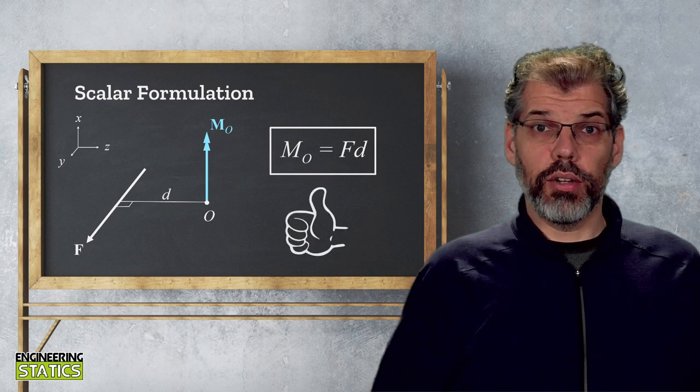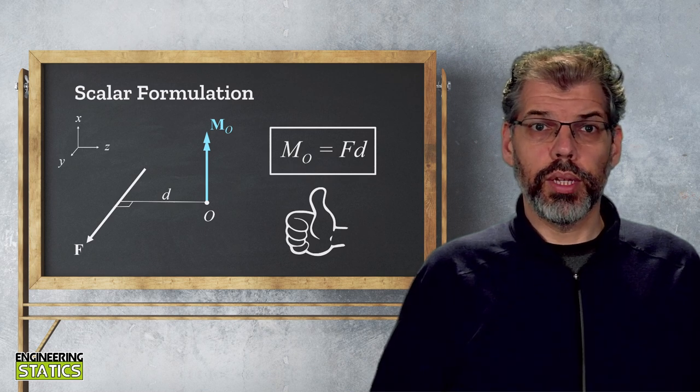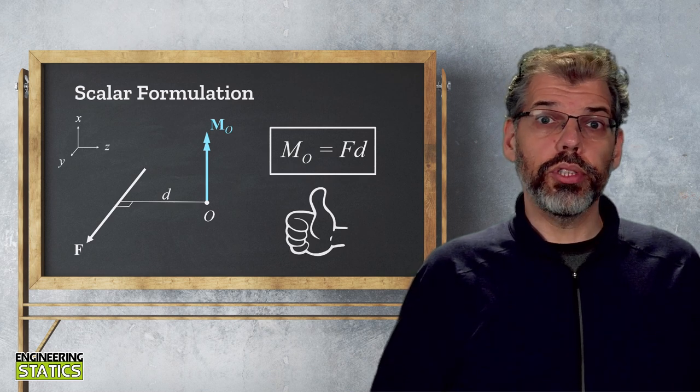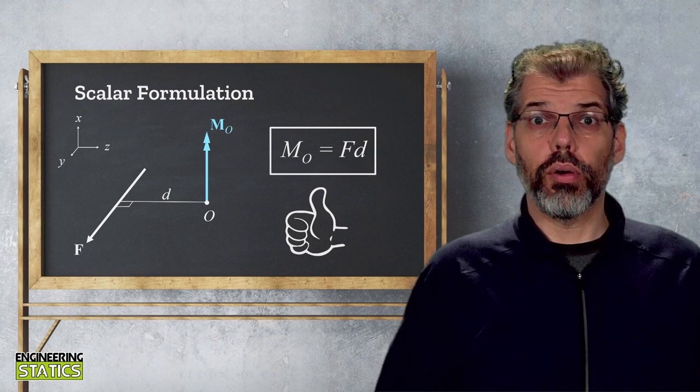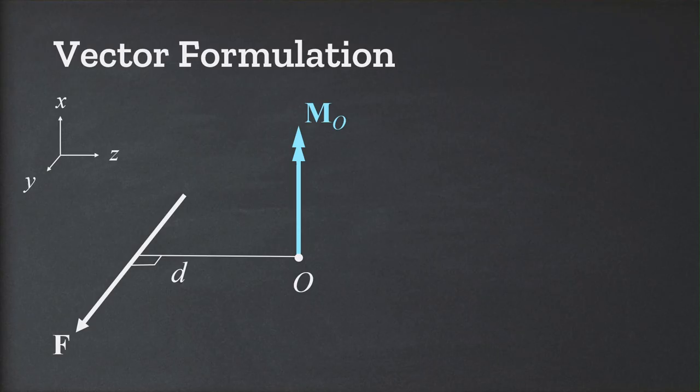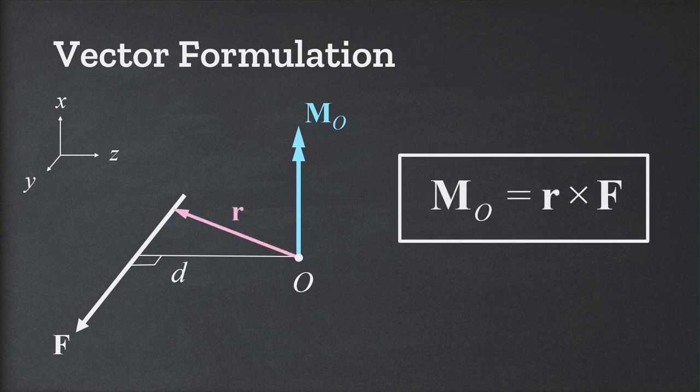But this is all in scalar formulation. Isn't there a vector formulation as well? Indeed there is, and it uses something you have recently learned in calculus, the cross product. The vector formulation of the moment of a force is M equals r cross F, where the cross indicates the vector cross product.